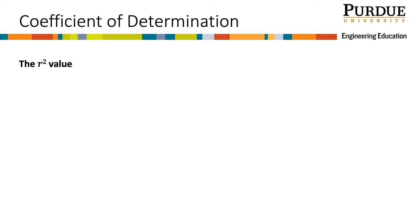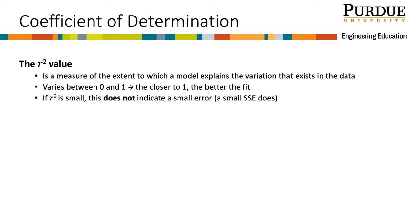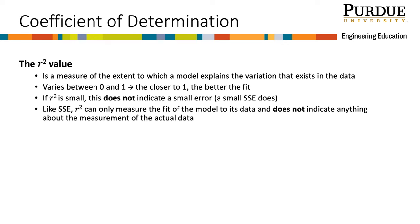Let's go into a little more detail about how to interpret the coefficient of determination R squared. The R squared value is a measure of the extent to which a model explains the variation that exists in the data. It varies between 0 and 1 — the closer this value is to 1, the better the model line fits our data. If R squared is small, this does not indicate a small error; a small SSE indicates a small amount of error. Like SSE, R squared can only measure the fit of the model to its data and does not indicate anything about the measurement of the actual data.